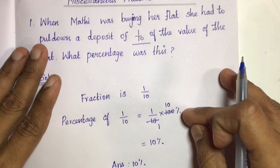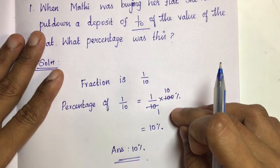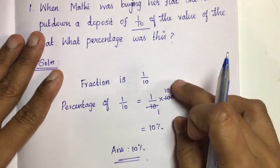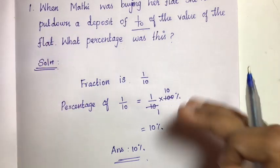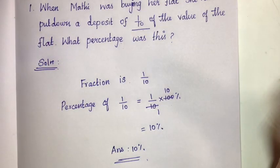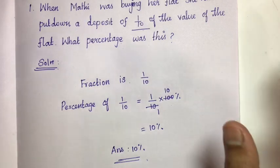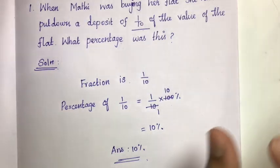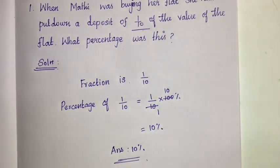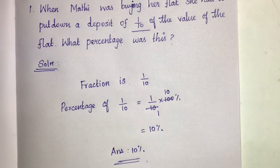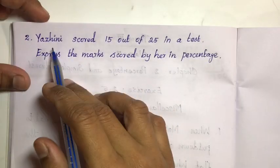To convert a fraction to percentage, multiply by 100 and cancel. So if you deposit 1/10, that equals 10%. The first day deposit is 10%. Answer is 10%.